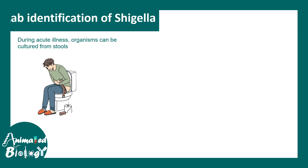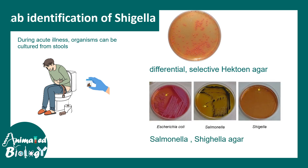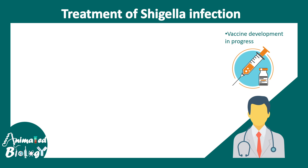For lab identification, a stool test during the acute phase of illness can detect Shigella using Hektoen agar or Salmonella-Shigella agar. On Salmonella-Shigella agar, enteric pathogens including Salmonella, E. coli, and Shigella can be isolated based on their different characteristics.